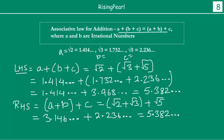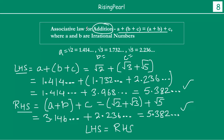So I have noticed that the left hand side value is 5.382 something and the right hand side value is again 5.382 something. Left hand side is equal to right hand side. So we can say yes, the associative law for addition, which basically is A plus B plus C equals A plus B plus C, is verified for irrational numbers.